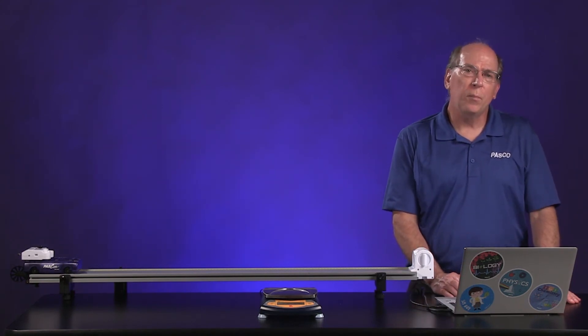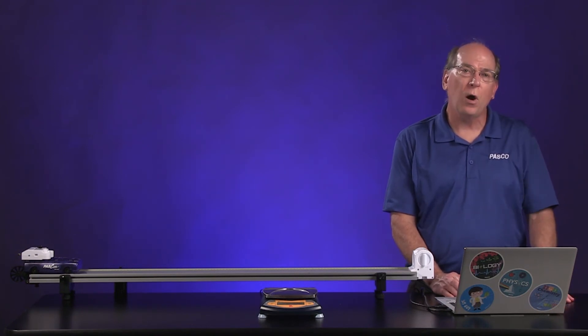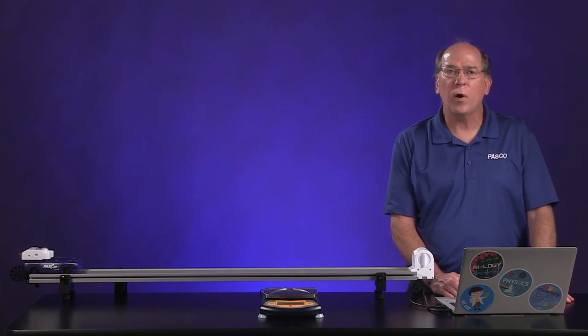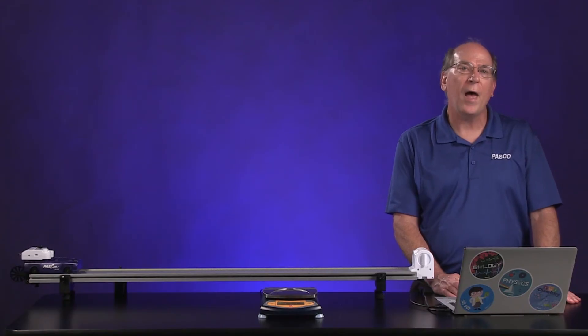The force on the cart can be obtained by first selecting the part of the graph where the cart was moving, and then using the tools of the data collection software to find the average or the mean. And so this is the part where it was moving. And so I can select that and then ask the computer to tell me what that is. And so you'll record that.